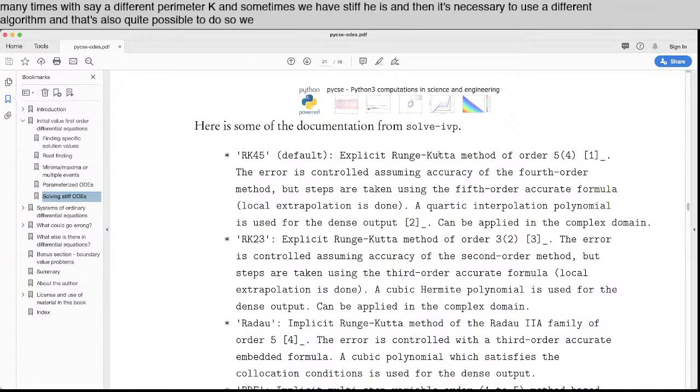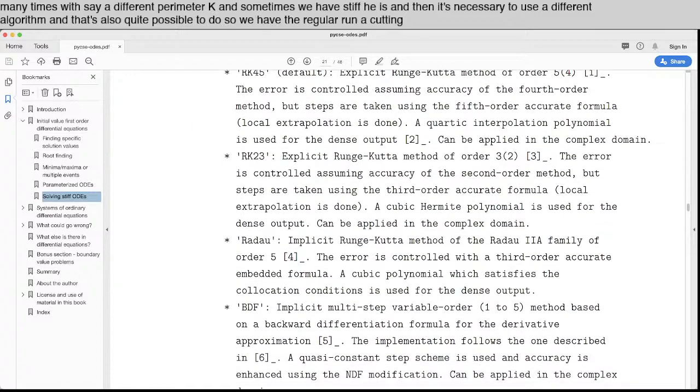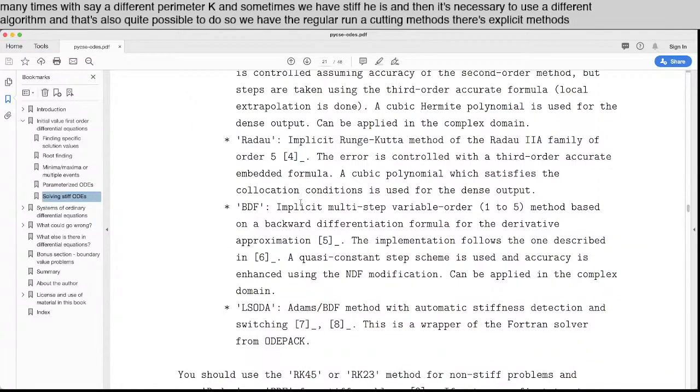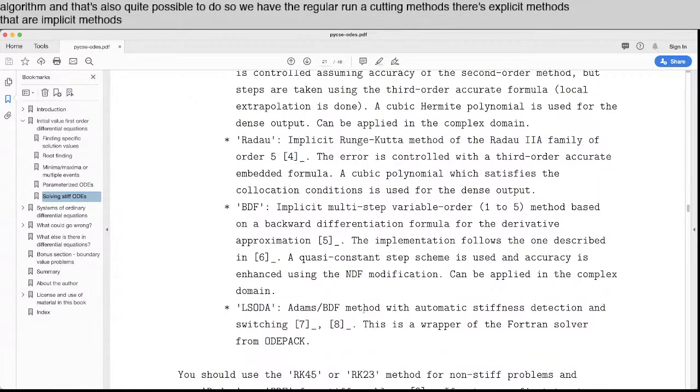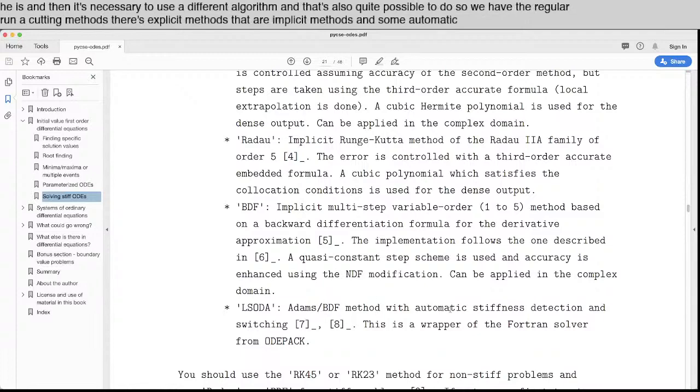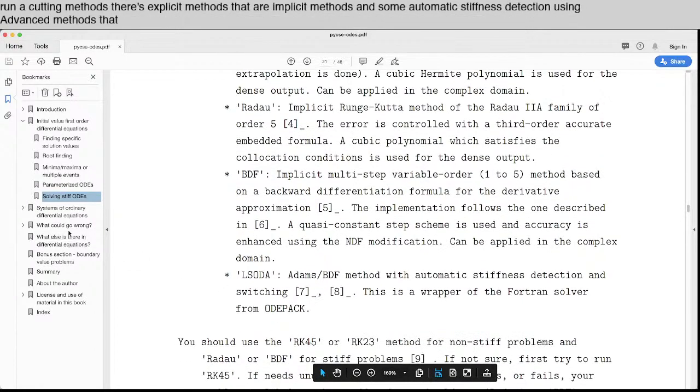So we have the regular Runge-Kutta methods. There's explicit methods. There's implicit methods. And some automatic stiffness detection using advanced methods that you can learn about.